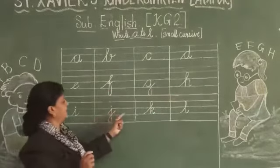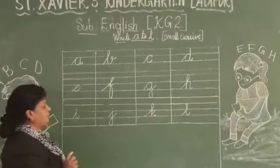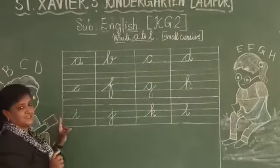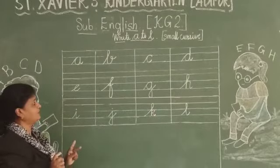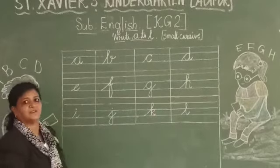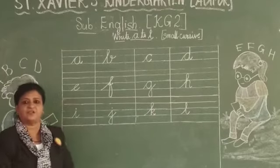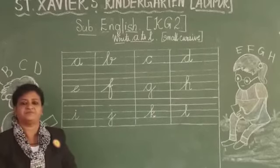J, K, L. Okay children? You write nicely in your four-line books. Nicely and neatly. Thank you, and have a nice day. Bye-bye.